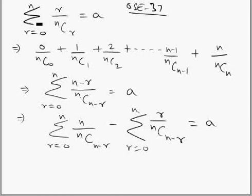This is given: summation of r over nCr where r varies from 0 to n equals a. We have to find summation of just 1 over nCr, r varies from 0 to n.